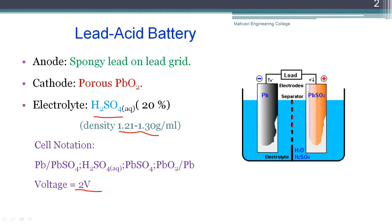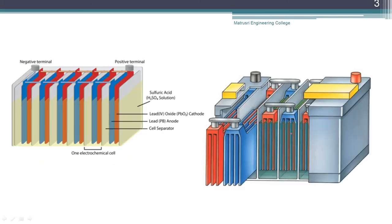A single cell produces an EMF of 2 volts. A car battery consists of a total of six such cells connected in series, giving a net voltage of 12 volts.